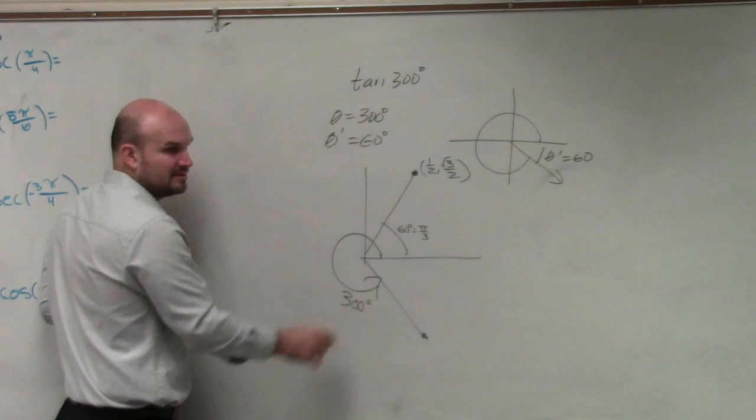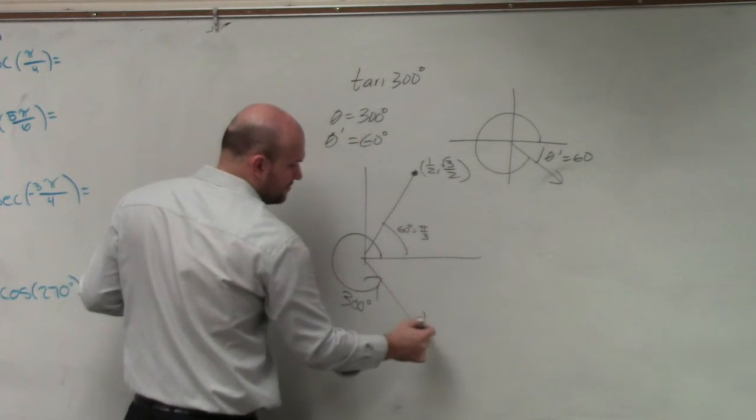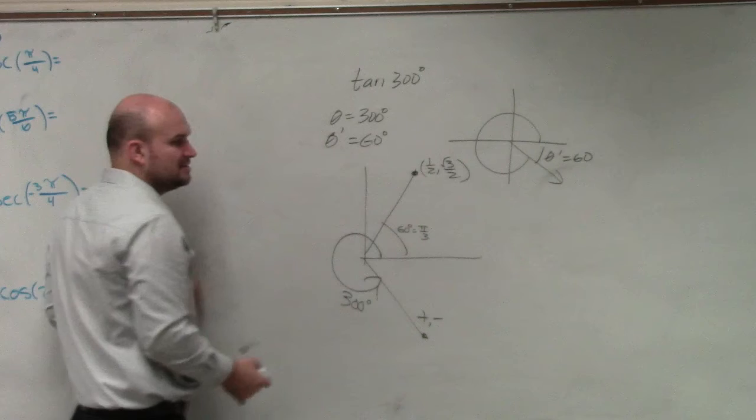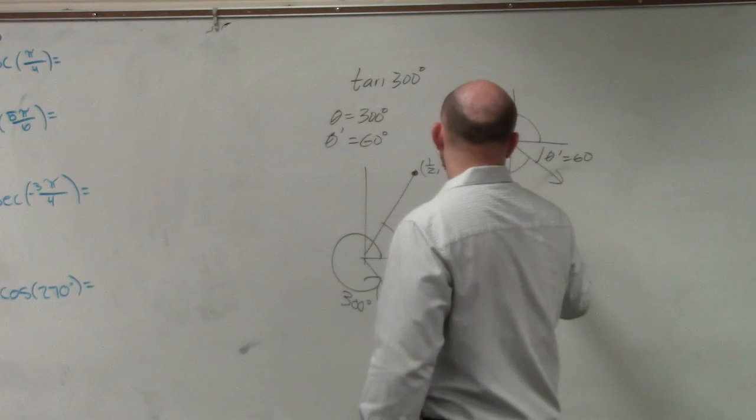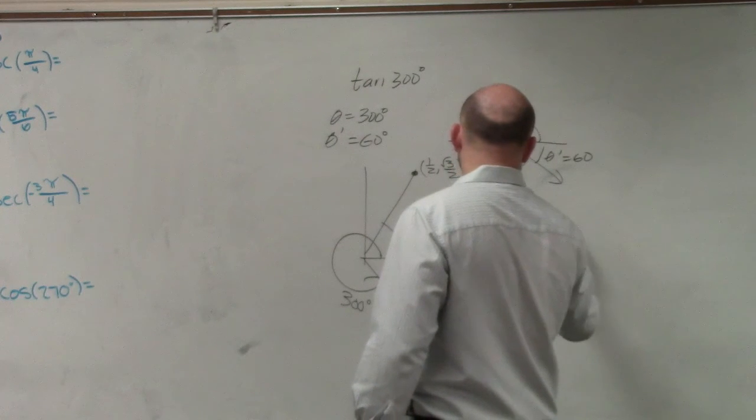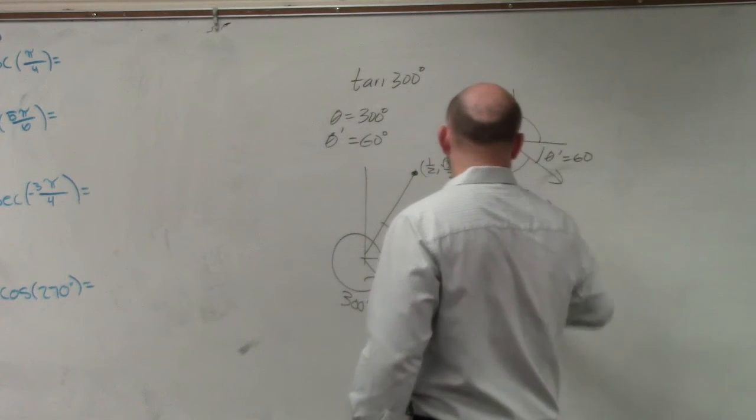So therefore, what's going to be negative? The y. The y-coordinate, right? Plus negative. So I'll do the tangent of square root of 3 over 2, which is negative over 1 half. I'm sorry.